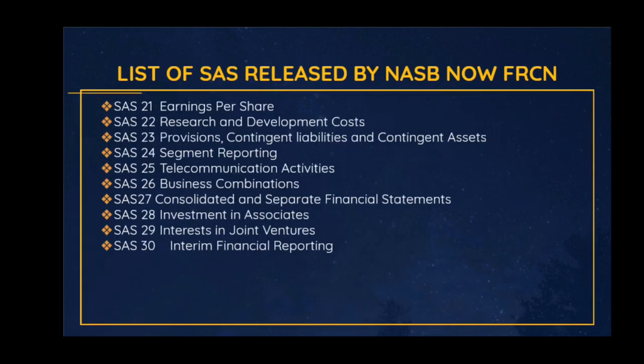SAS 20 Consolidated Financial Statements, SAS 21 Earnings per Share, SAS 22 Research and Development Costs, SAS 23 Provisions, Contingent Liabilities and Contingent Assets, SAS 24 Segment Reporting, SAS 25 Telecommunication Activities, SAS 26 Business Combinations, SAS 27 Consolidated and Separate Financial Statements, SAS 28 Investments in Associates, SAS 29 Interests in Joint Ventures, SAS 30 Interim Financial Reporting. Those are the 30 standards released by the Nigeria Accounting Standard Board. Since the adoption of IFRS and the formation of the Financial Reporting Council of Nigeria, the IFRS-based system of accounting has been adopted and is what is now being used today.